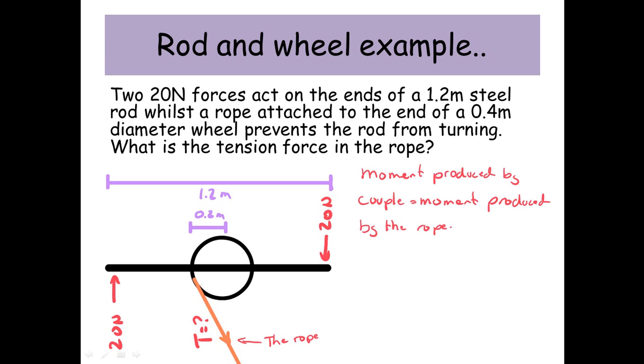The moment produced by the couple equals the moment produced by the rope. The couple is trying to turn the object clockwise, while the rope tries to turn it anticlockwise. These moments must be equal because the system is in equilibrium.